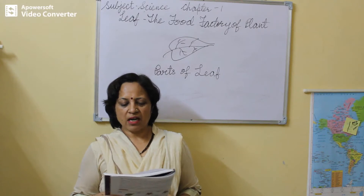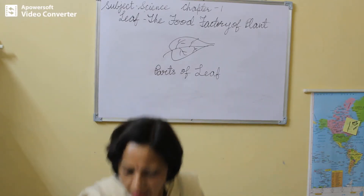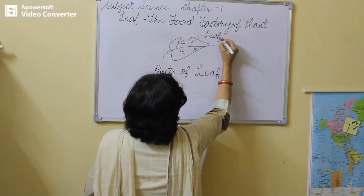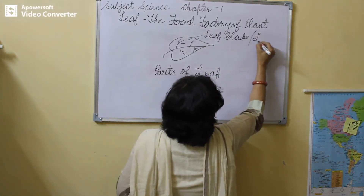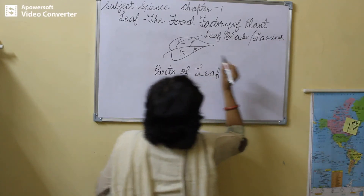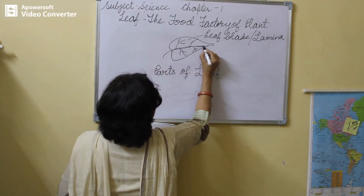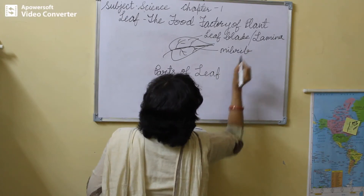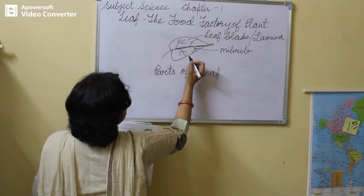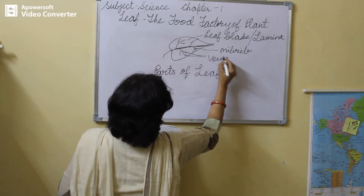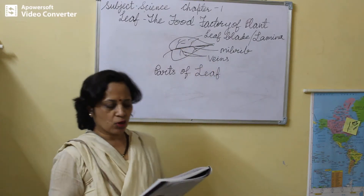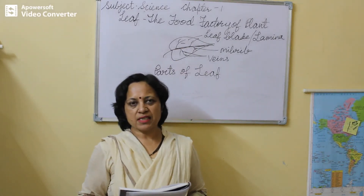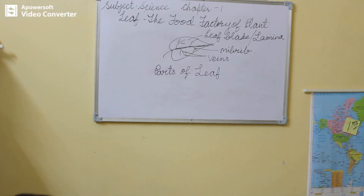Different plants have different shapes and sizes of leaf. The green exposed portion of the leaf is called leaf blade or lamina. This middle line going through the leaf is called the midrib. The branches arising from the midrib are called veins, which supply water and food to different parts. There are small openings on the under surface of the leaf called stomata, which help in exchange of gases.